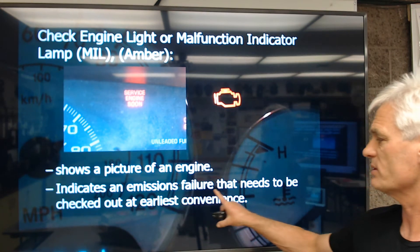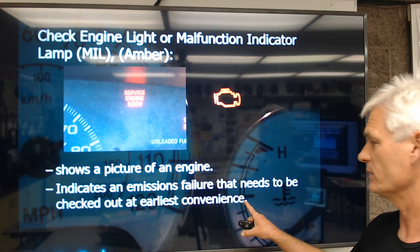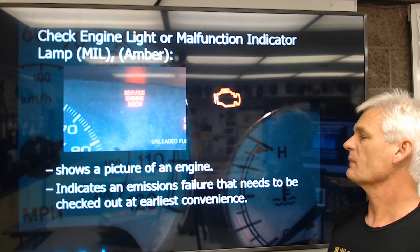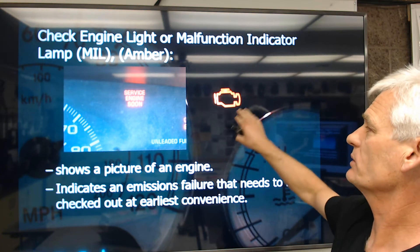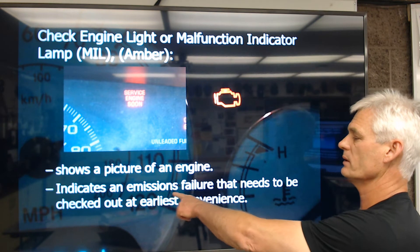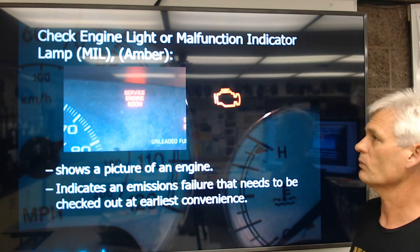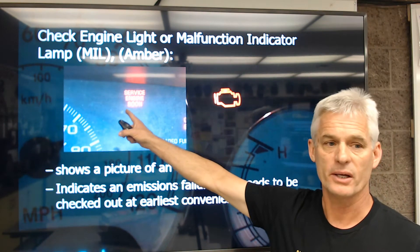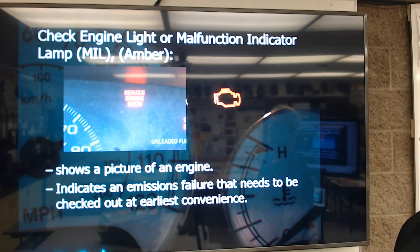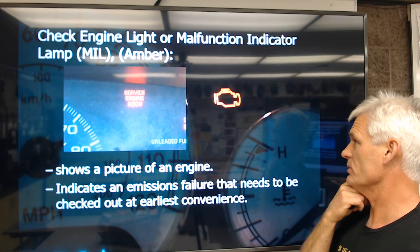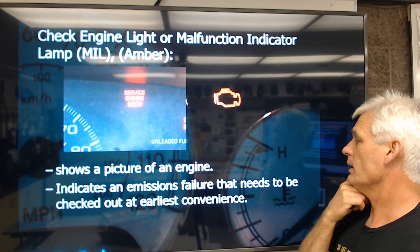It indicates an emissions failure that needs to be checked out at your earliest convenience. Most people think that this check engine light means something's wrong with the engine and they can't drive. It could be something related to the engine, but it's something related to the engine that causes the vehicle to produce pollution. It is what's known as the malfunction indicator lamp, or MIL. Older cars had 'service engine soon' words usually in yellow. A car will not pass smog if this check engine light is on — it means you have some sort of a failure related to emissions.